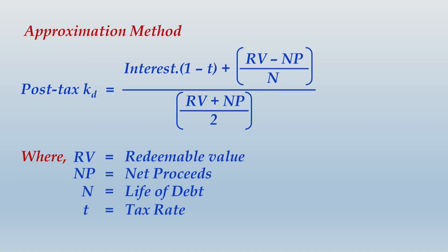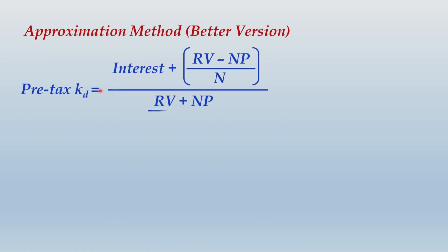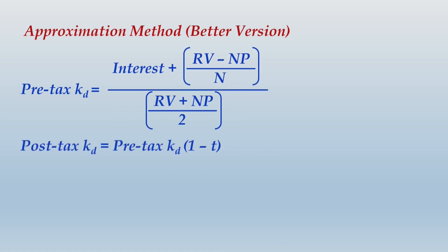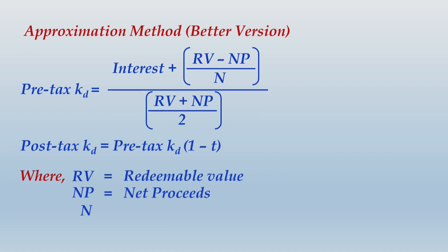There is a second, better version of the approximation method. Here, you do not compute post-tax interest directly in the formula. Instead, the gross pre-tax interest is taken as-is, computing a pre-tax Kd first. Then the post-tax cost of debt is computed separately as: pre-tax Kd × (1 − t). The variables RV, NP, n, and t carry the same meanings. This is considered the better version of the approximation method.